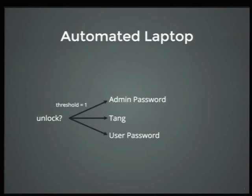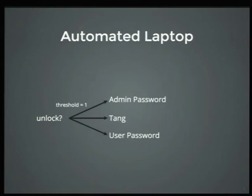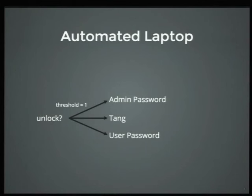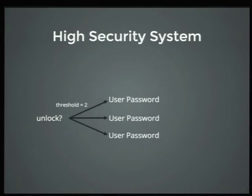Now let's add Tang into the mix. Same setup, but now automated. We still have the admin password for recovery and the user password for when the Tang server is not available. But if the Tang server is present, we automatically unlock the laptop. Think of how this works in an office: on Monday morning you turn on your laptop, it boots, and you don't type anything because it's on the corporate network and can talk to the Tang server. On Friday night at a coffee shop, you're on a Wi-Fi hotspot and don't have access to Tang — so when you turn on your laptop, you get prompted for a password.